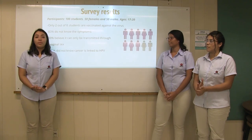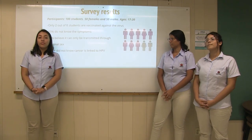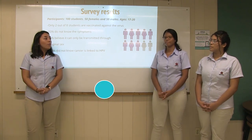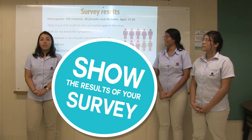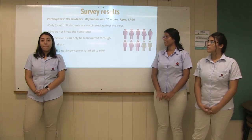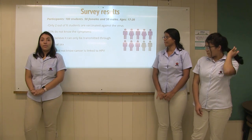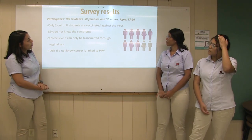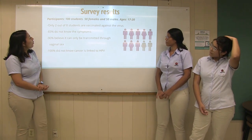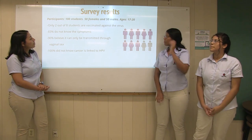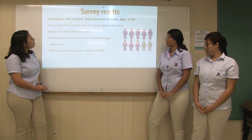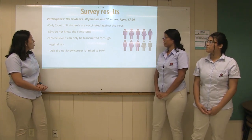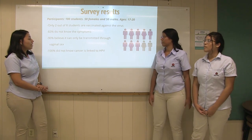As Dr. Sarmiento mentioned previously, women between 15 and 44 years old are vulnerable. Therefore, the Uninor community is also vulnerable. We ran a survey among a big group of students here and we noticed that the biggest problem is lack of education. Among 100 students — 50 males and 50 females, aged between 17 and 20 — only two out of eight students are vaccinated against the virus. 83% do not know the symptoms. 90% believe it can only be transmitted through vaginal sex. 100% did not know cancer is linked to HPV.